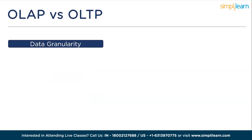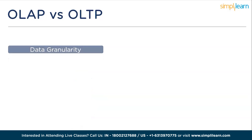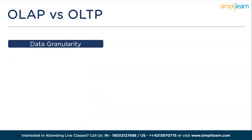Next is data granularity. OLAP deals with aggregated and summarized data, providing a high-level view of information across various dimensions. It focuses on trends, patterns, and overall performance analysis. OLTP operates at a detailed level, capturing individual transactional data with a focus on maintaining accuracy and integrity at a record level.